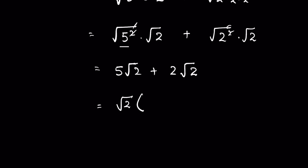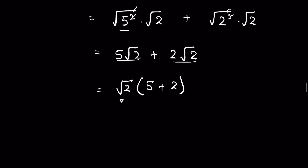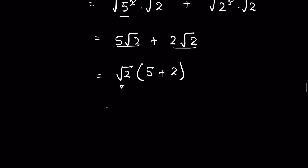5 times square root of 2 divided by square root of 2 gives us 5, and 2 times square root of 2 divided by square root of 2 gives us 2. Now we can add these: 5 plus 2 is 7, so the result is 7 times square root of 2. This is our final simplified answer.